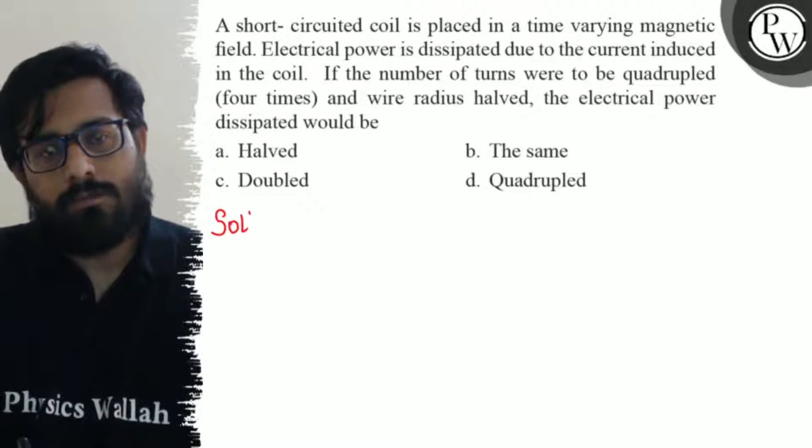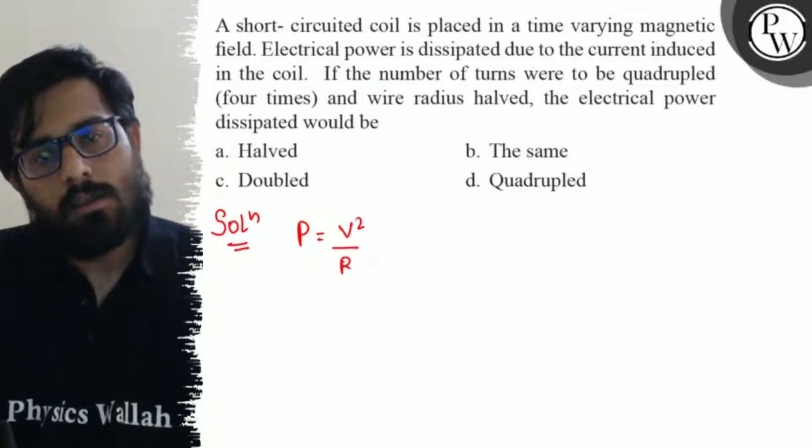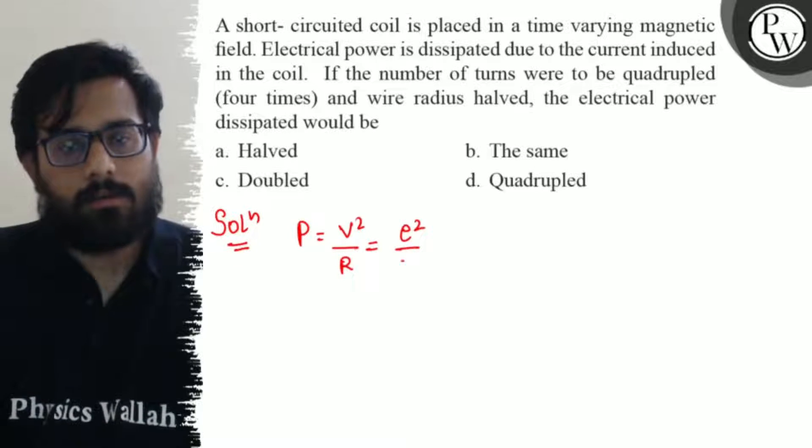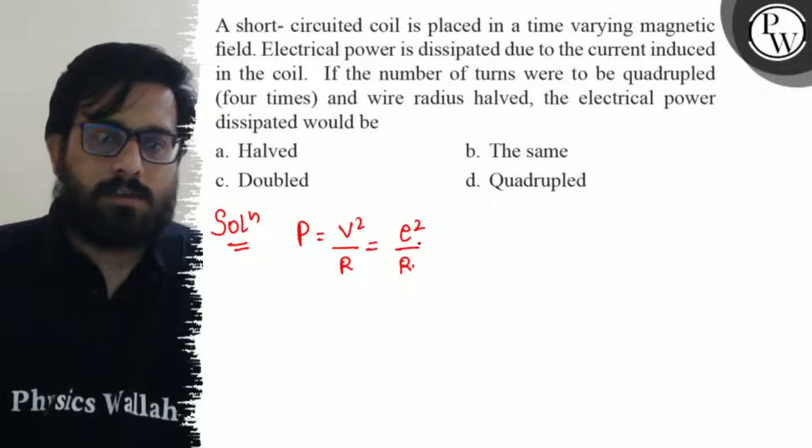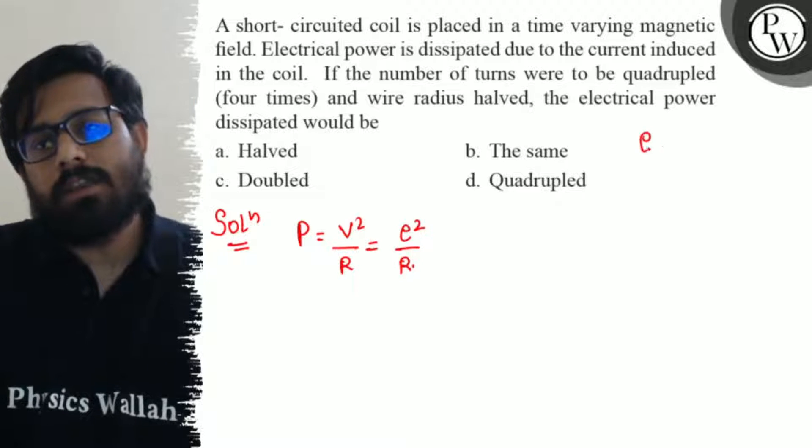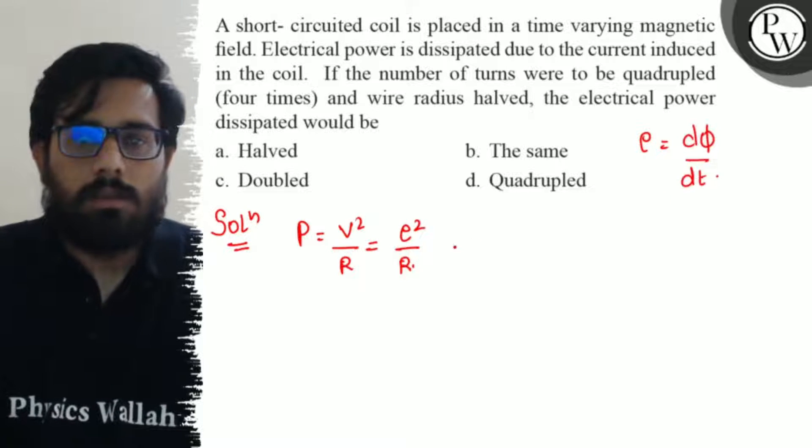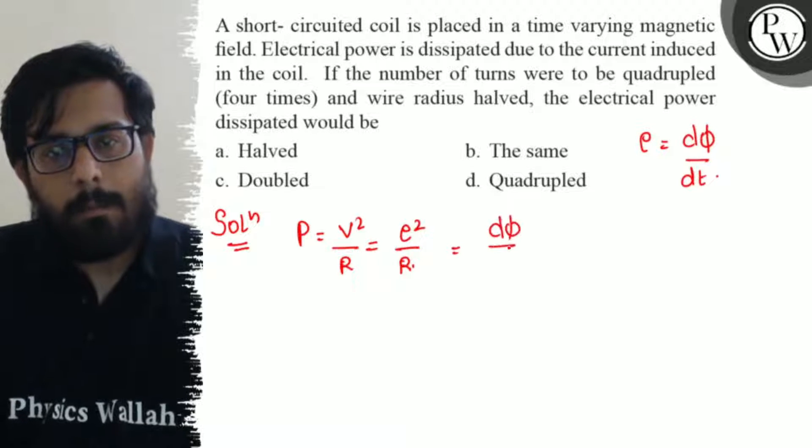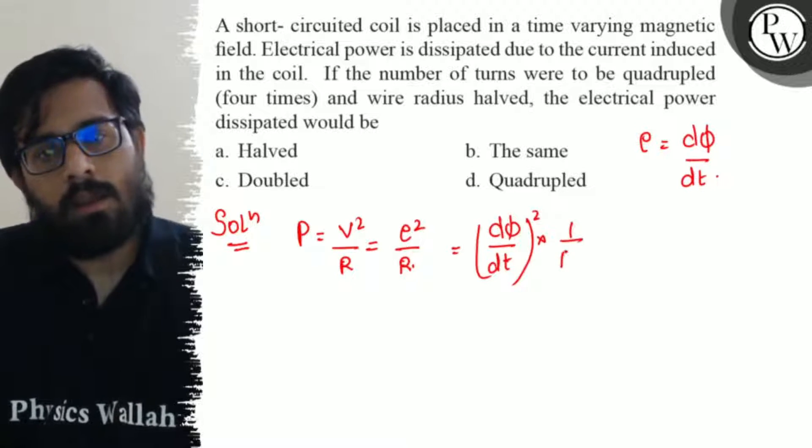So in this question, we know that the electric power is equals to V square by R, or you can say E square by R. The induced emf will be E, that will be equals to voltage. So power is equals to E square by R. Now E can be also written as dφ/dt. So this can be written as (dφ/dt)² times 1 by R.